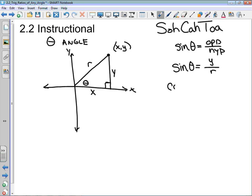For cos theta, according to SOHCAHTOA, it's the adjacent over the hypotenuse. If we apply that to our angle in standard position, we see that cos theta is equal to x over r.